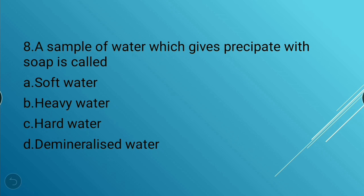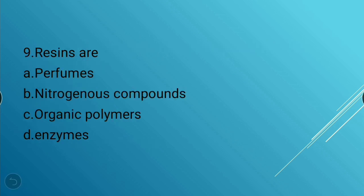Next question: A sample of water which gives a precipitate with soap is called — options: soft water, heavy water, hard water, or demineralized water. The answer is hard water. Next: Resins are — perfumes, nitrogenous compounds, organic polymers, or enzymes. Resins are organic polymers.